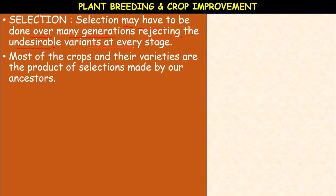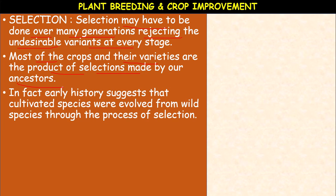Most of the crops and their varieties are the products of selections made by our ancestors. This is an ancient, old method. The early history suggests that cultivated species evolved from wild species through the process of selection. The present-day plants were produced from ancestors; cultivated plants evolved from wild species through the process of selection.